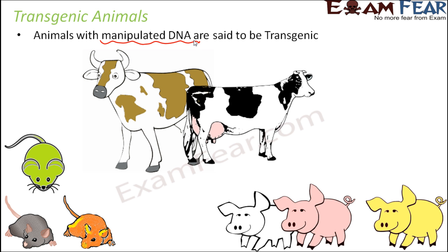When we genetically engineer animals, we do it for our benefit, so all the advantages are in favor of human beings. What we do is insert some desired genes into the animals, so obviously there are going to be some desirable benefits. And that is why we have transgenic animals.